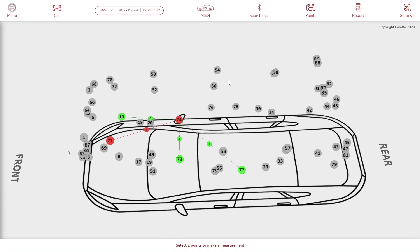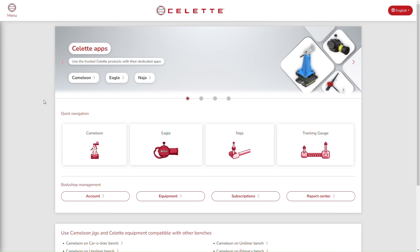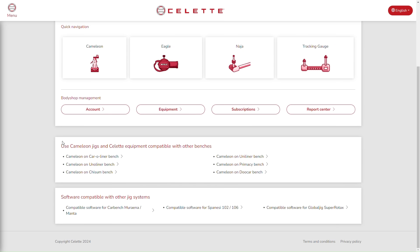Moreover, the Salet AI Web Tools extend their versatility to be compatible with equipment using non-metric systems, such as Car O-Liner, Uni-Liner, Primacy, Chisholm, and Ducar Benches.